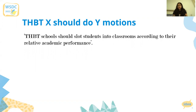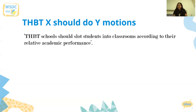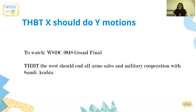In these motions, proposition has to show an obligation for the actor to implement the policy using some criteria — for example, proposition could say this is better for the education of students at large. Opposition can take the position that the actor doesn't have an obligation to do this, or that they have an obligation to do something else instead. For instance, schools have an obligation not to do this and can use the role of schools in promoting cohesion and diversity, stating that students benefit from interacting with students from diverse academic backgrounds and that this intermingling benefits the all-round development of students.